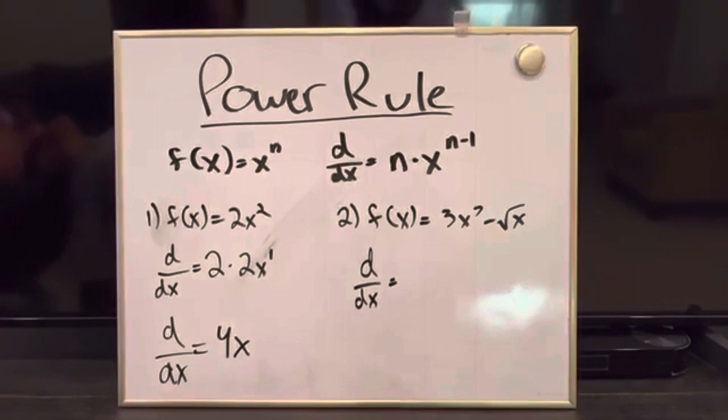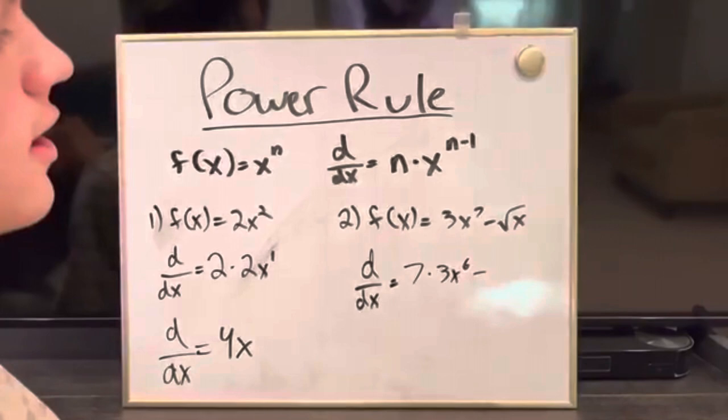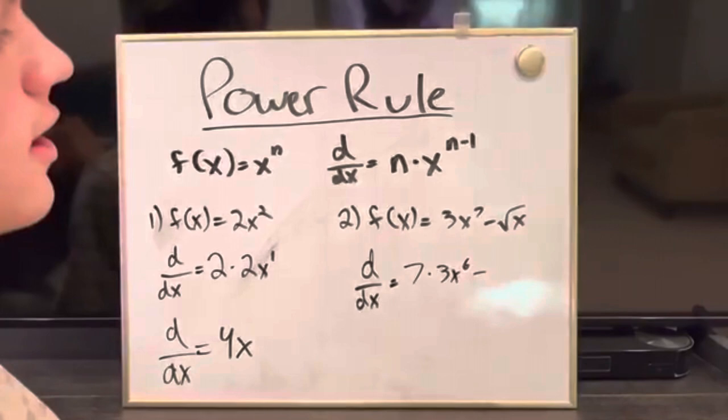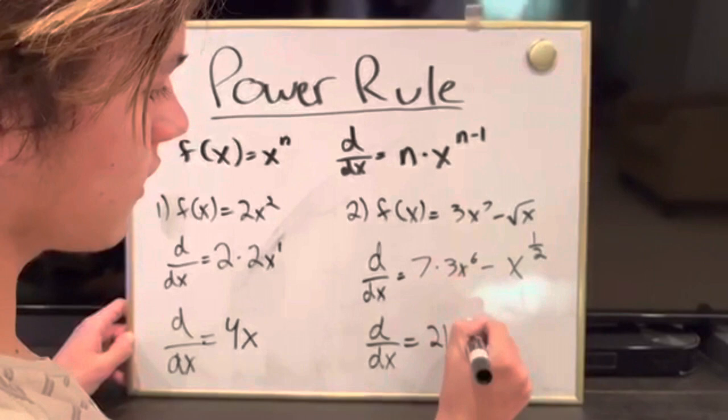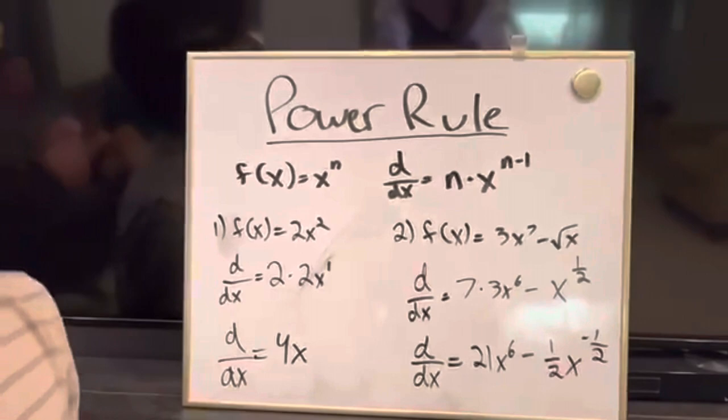The second one is a little bit more difficult. You bring the 7 to the front times 3x and then n minus 1 — so 7 minus 1 is 6. And then the square root of x can be rewritten as x to the 1 half. So it becomes 7 times 3, which is 21x to the 6. Then you bring the 1 half to the front: 1 half times x, and 1 less than 1 half becomes negative 1 half. So that's how you do the power rule.